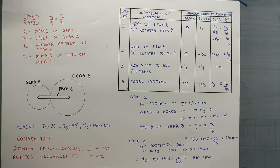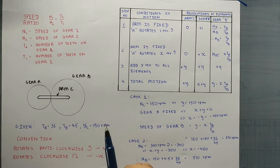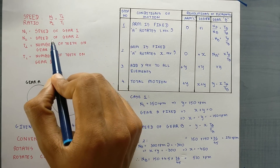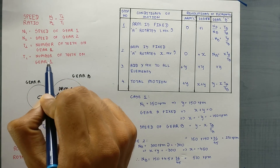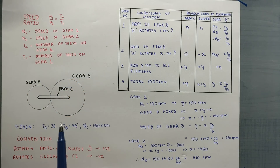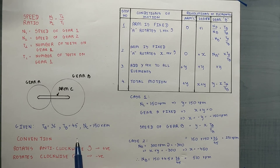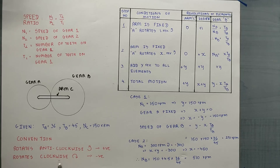Before solving, the basic formula we need to keep in mind is the speed ratio: N1 by N2 equals T2 by T1, where N1 is the speed of gear 1, N2 is the speed of gear 2, T2 is the number of teeth on gear 2, and T1 is the number of teeth on gear 1. The given data is: TA = 36 teeth, TB = 45, and NC = 150 RPM. Before solving, we need to decide our convention — anti-clockwise direction is positive and clockwise direction is negative.